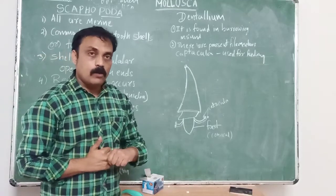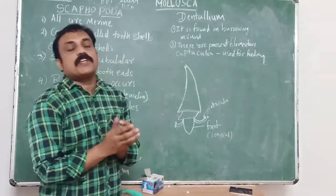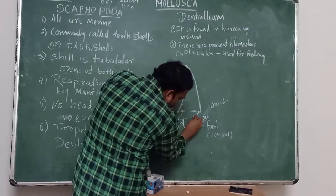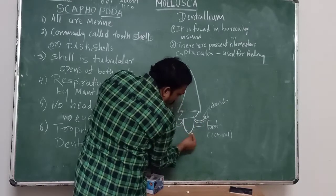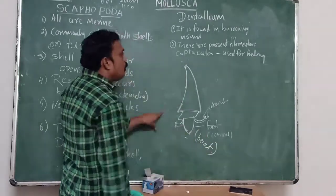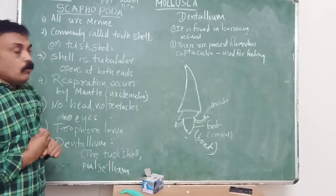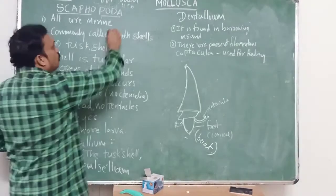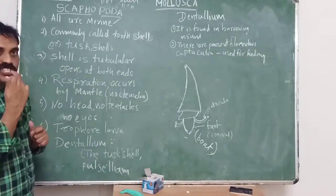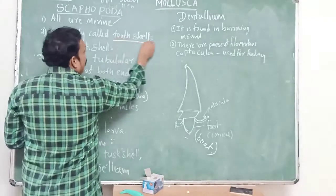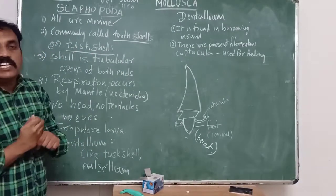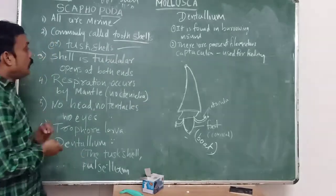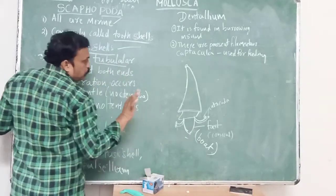The example of Scaphopoda is Dentalium. In Dentalium, the foot is conical or board-shaped. Like Monoplacophora and Polyplacophora, these organisms are also marine. They are commonly called tooth shells or tusk shells.